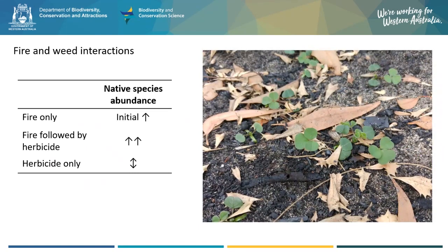We also looked at how fire and weeds can affect native species abundance, and found that fire alone causes a normal post-fire peak in abundance, followed by numbers stabilising after a few years — something that we normally see following fire in Banksia woodlands. We also found that fire followed by weed control can lead to a large increase in native species abundance, especially where weeds were highly abundant before fire. The effect of herbicide-only treatments varied and depended on initial weed abundance.